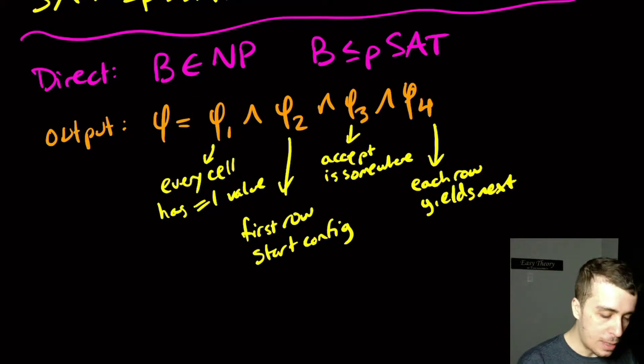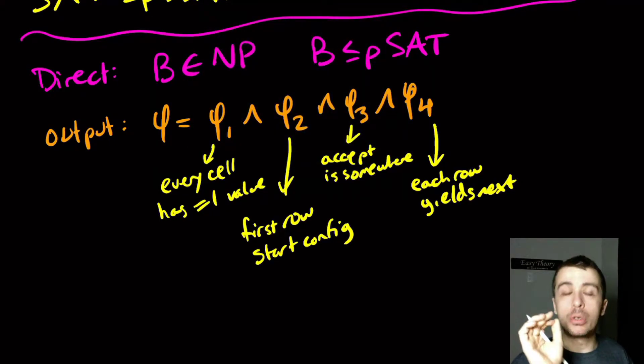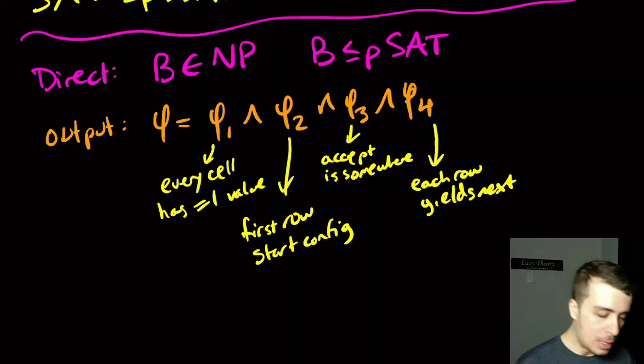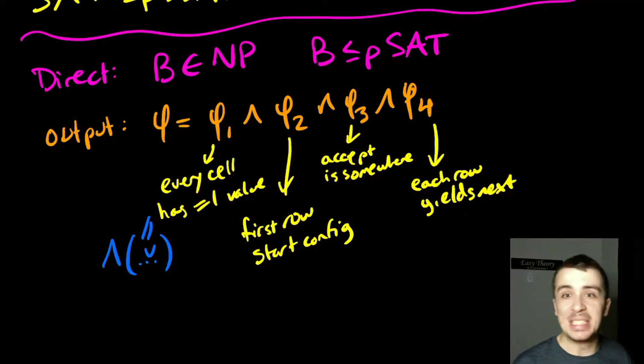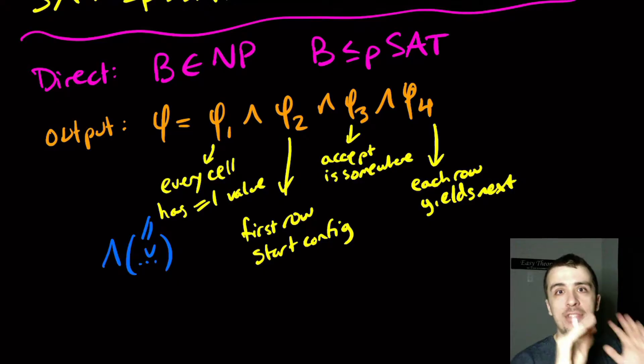For φ1, if you think about what we did, we ensured that every cell had exactly one value, which means you can't have two, and you must have at least one. So it turns out that that one was just an AND of ORs. It might not be exactly three literals per clause, but it's either a whole bunch of them, or exactly two. We will show if you have something other than three in a clause, we can get to three exactly, and that's pretty easy to show.